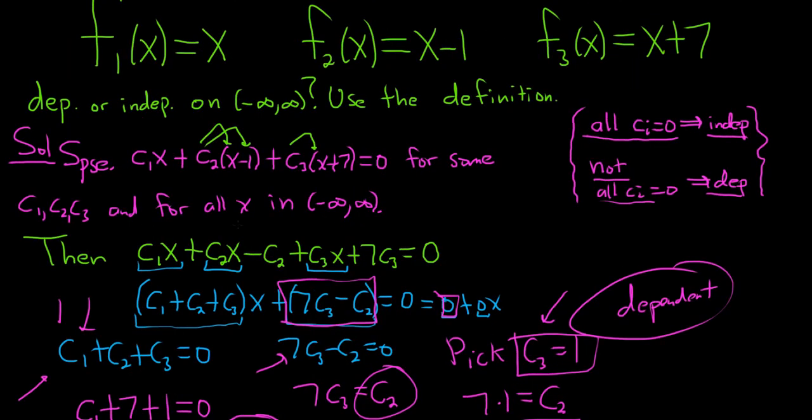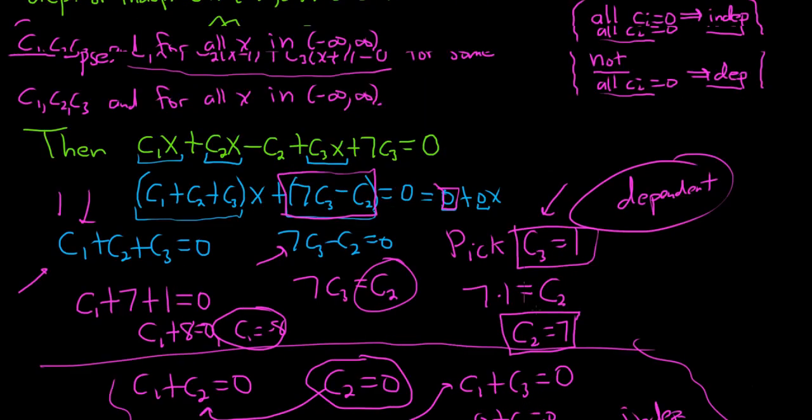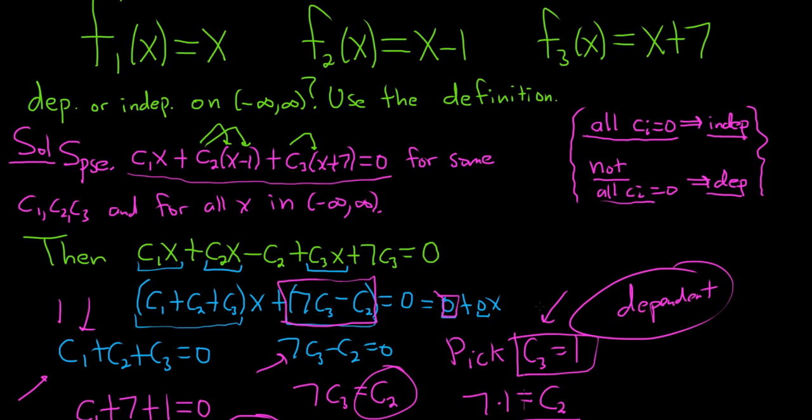The reason is, in the definition, it says if there exists constants, not all zero, such that this is true, then the functions are dependent. So if you can find them, it's dependent. So you try to find them. And if you find them, like we did in this example, it's dependent. If you can't find them, then that means it's going to be forced upon you, and it'll be independent. So I hope that made sense.